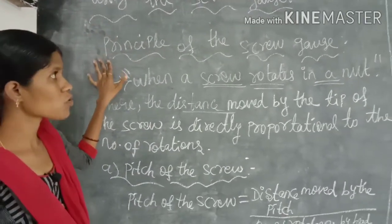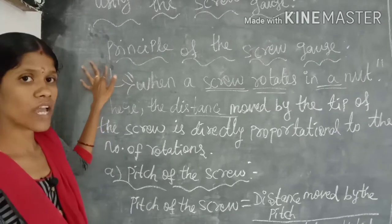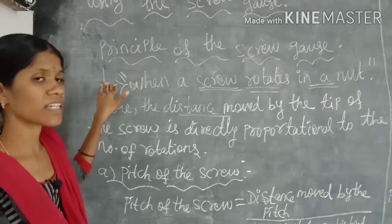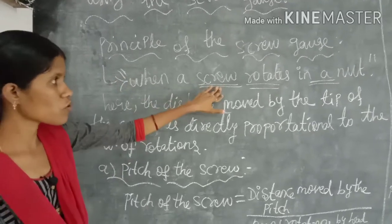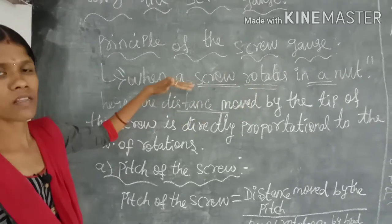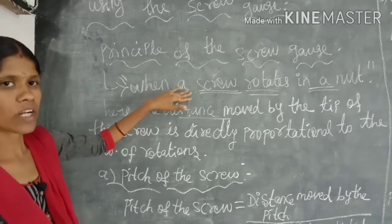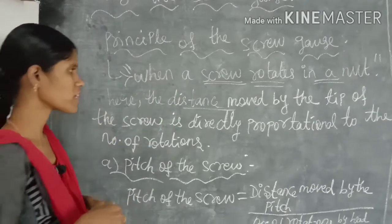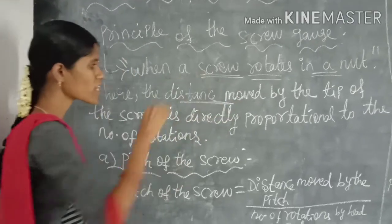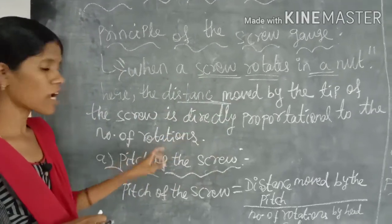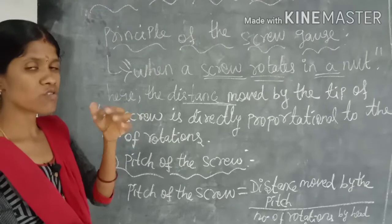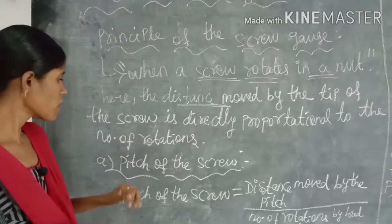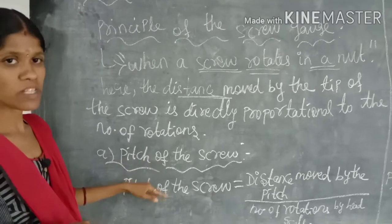Next is the principle of the screw gauge. When a screw rotates in its nut, it moves forward or backward. Based on this principle, the screw gauge works. The distance moved by the tip of the screw is directly proportional to the number of rotations of the screw.